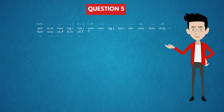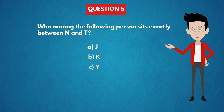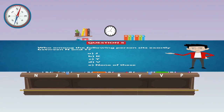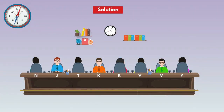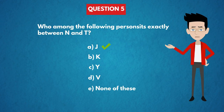Question 5: Who among the following person sits exactly between N and T? Options: A) J, B) K, C) Y, D) V, E) None of these. In the diagram, N sits here and T sits here, so the person sitting exactly between N and T is J. The answer is Option A: J.